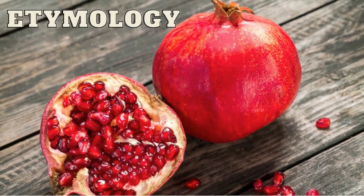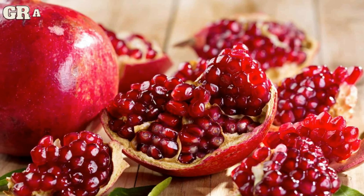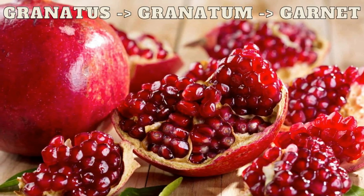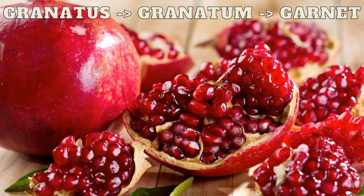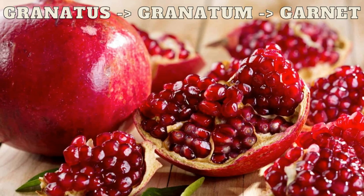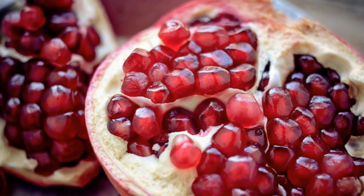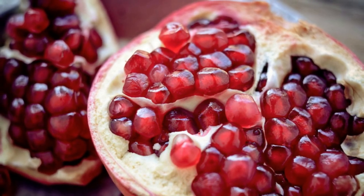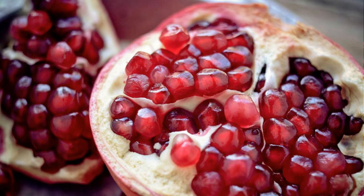The word garnet, however, is derived from the medieval Latin granatus, itself derived from the word granatum, which is the genus for the pomegranate — a many-seeded fruit the Greco-Roman world associated with the gemstone due to the jewel-like appearance of said seeds. However, even in ancient Rome it held several names; the earliest recorded name for the garnet was given by Theophrastus.